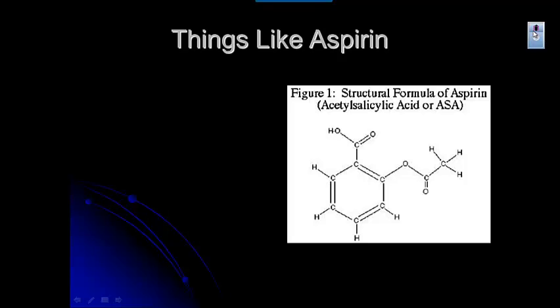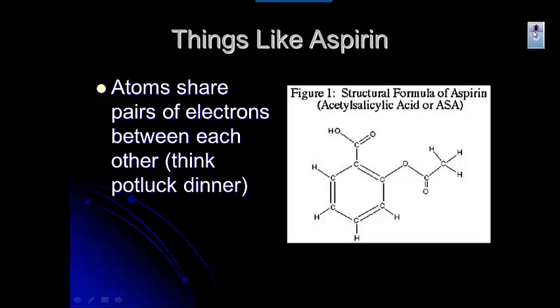This is a molecule of acetylsalicylic acid, or what we know as aspirin. Each of the little lines between the elements — like here between O and C — represents a shared pair of electrons.